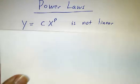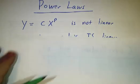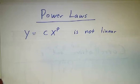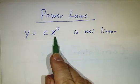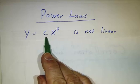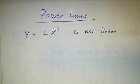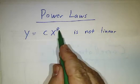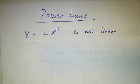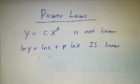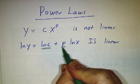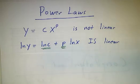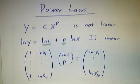The last thing is we're going to look at power laws. There are some models where, for theoretical reasons, you believe that y should grow like a power of x. But you don't know the constant in front and you don't know which power of x — so the unknowns are c and p. Again, that's not a linear system. But if you take the log of both sides, you do get a linear system. You're trying to solve for log c and for p.